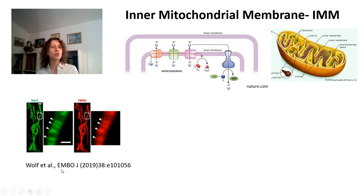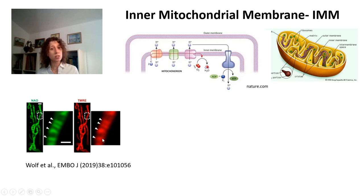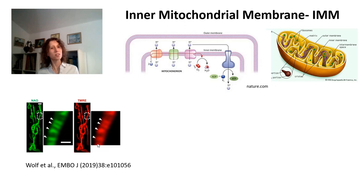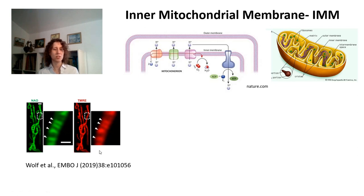We now know that if you use probes that accumulate relative to membrane potential, they will accumulate mostly in crista and less in the intermembrane space. Interestingly, in a manner dependent on the tightness of crista junctions, you can have different membrane potentials for different individual crista. So across one single mitochondrion, you can have different membrane potentials because the membrane potential is mostly in crista and because of the tightness of the crista junction.